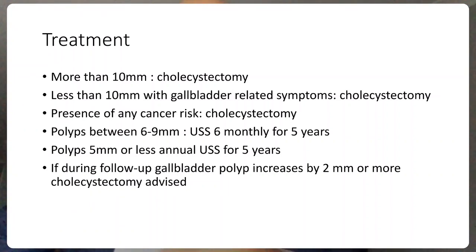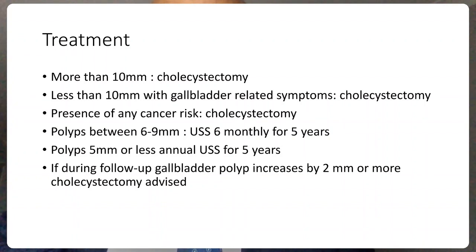To summarize: the cut-off is 1 cm — polyps of 10 mm or more require cholecystectomy. If less than 10 mm, we consider gallbladder symptoms, and if symptomatic, we remove the gallbladder. If any cancer risk factor is present, we remove the gallbladder regardless of size. Otherwise, polyps of 6 to 9 mm are followed with ultrasound every 6 months for 5 years, and polyps of 5 mm or less are followed annually for 5 years — with cholecystectomy advised if growth exceeds 2 mm at any point.